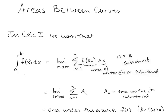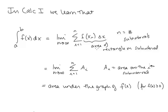In Calc 1, we learn that the definite integral of f of x from a to b is the limit as n goes to infinity of the Riemann sums for f of x. The elements of the sum are f of x_i times delta x, and this gives us the area of the rectangle on the i-th sub-interval — we could call that product a_i.